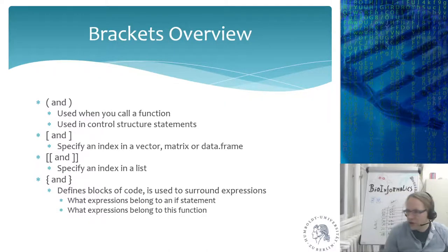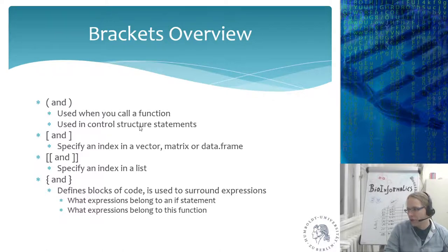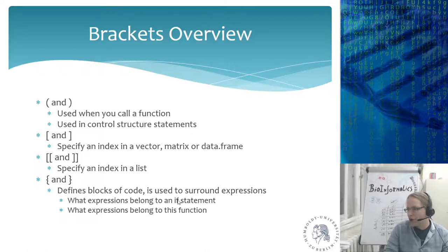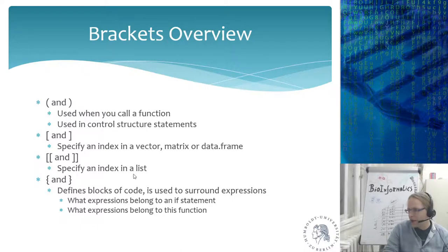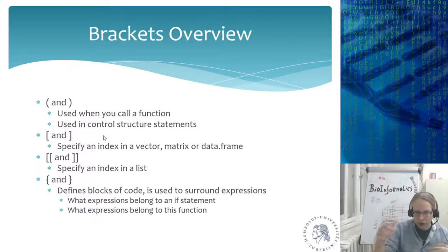A bracket overview: round brackets () are used when calling a function or in control structure statements like if. Square brackets [] are for indexing a vector, matrix, or data frame. Double square brackets [[]] are for indexing a list. Curly brackets {} define a block of code — surrounding what belongs to an if statement, or when building functions.